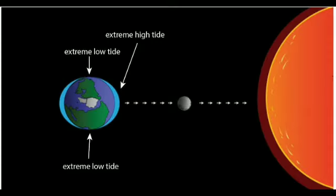On the other hand, when the sun, the moon, and the earth form a right angle, the attraction of the sun and the moon neutralize each other — the sun pulls water toward itself and the moon pulls water toward itself, so the effects cancel out. This happens at the first and third quarters of the moon. At this time, the tides are lower than normal low tides.